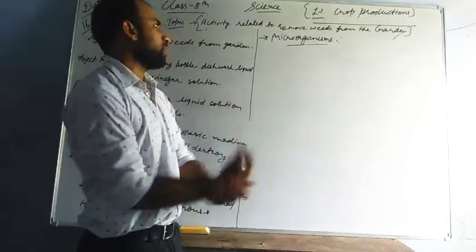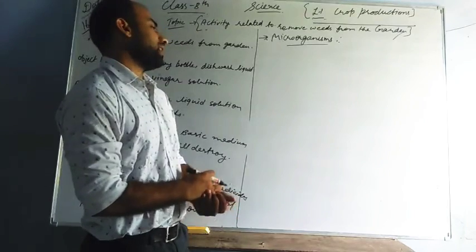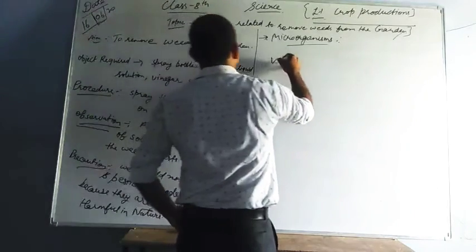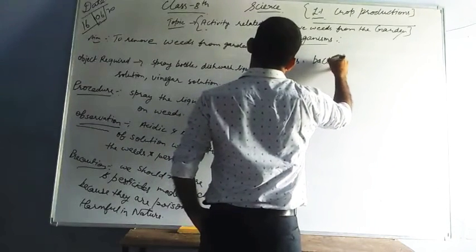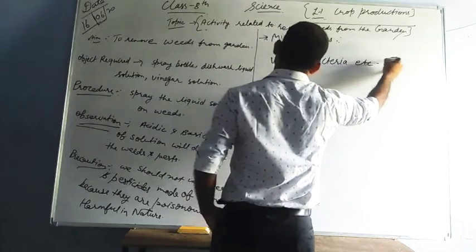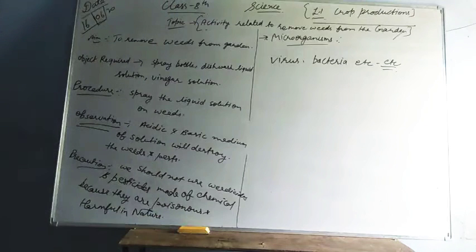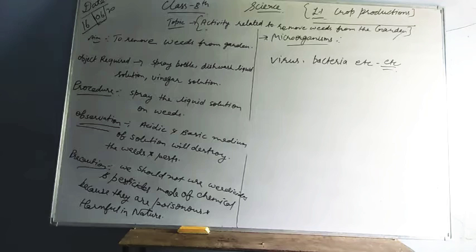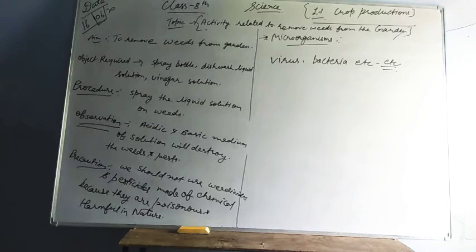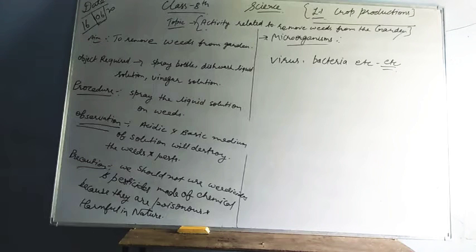These microorganisms destroy crops and create certain kinds of diseases. So to stop them, certain pesticides are required. Pests are controlled by spraying pesticides. I am now telling you the names of some pesticides which are used to control pests.